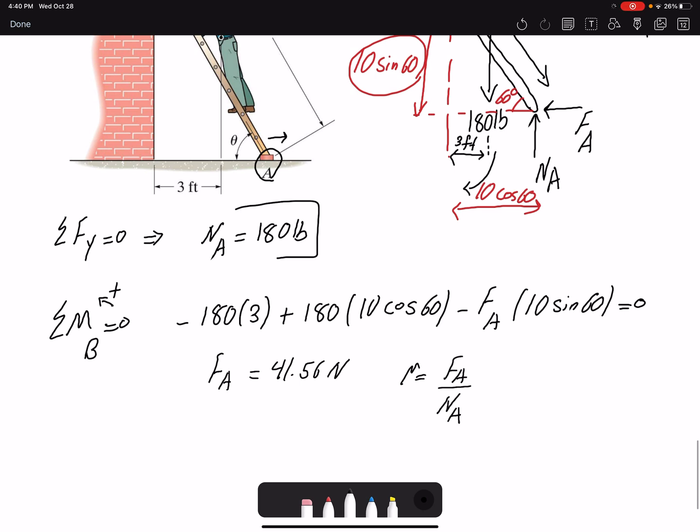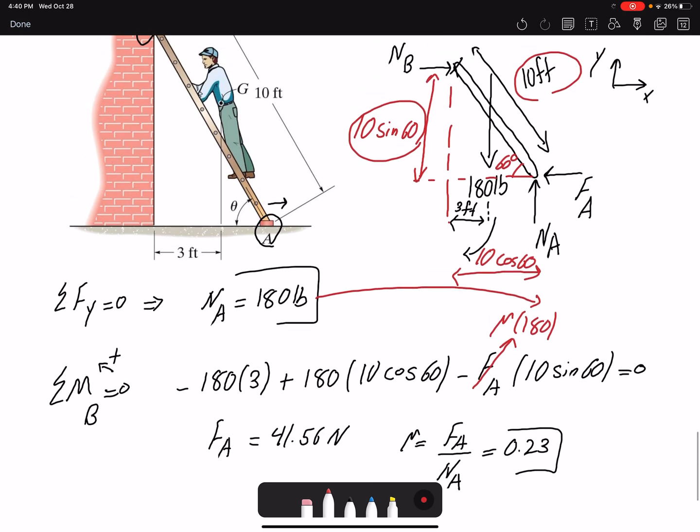It's a unitless parameter. Also, in this equation, I could replace FA with μ times NA, and I have the value for NA, so I could write μ times 180. Then the only unknown would be μ, so I could find μ that way as well.